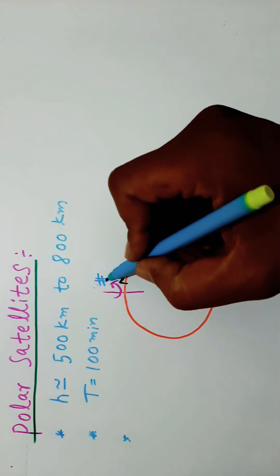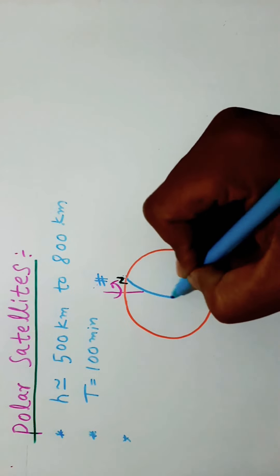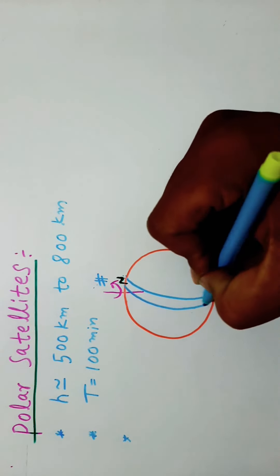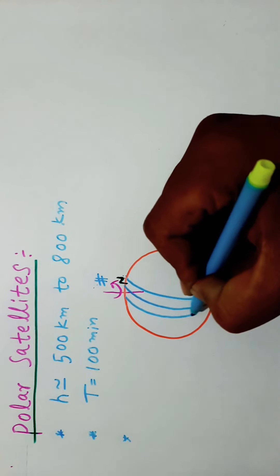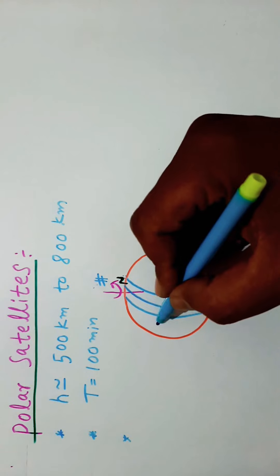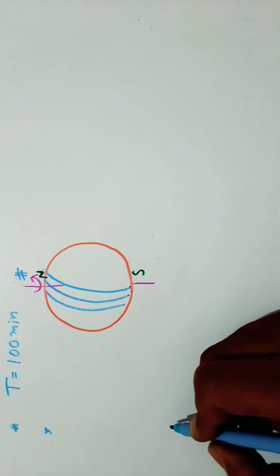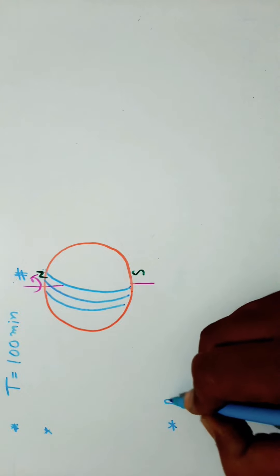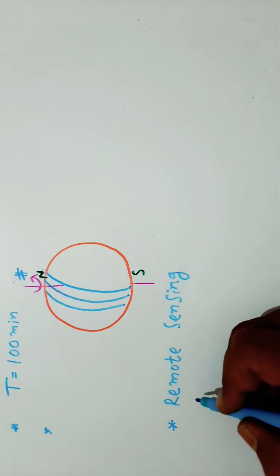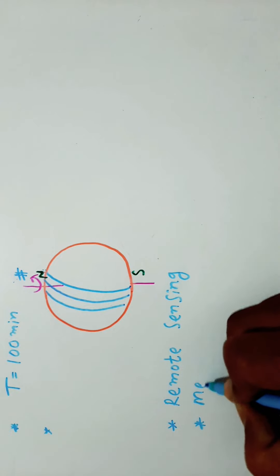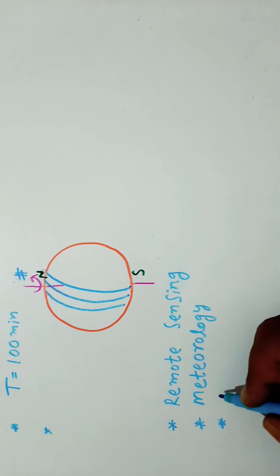A camera fixed on a satellite can view a small strip on the Earth in one orbit. Adjacent strips are viewed in the next orbit. The whole Earth can be viewed strip by strip during the entire day. These satellites are used for remote sensing, meteorology, and environmental studies of the Earth.